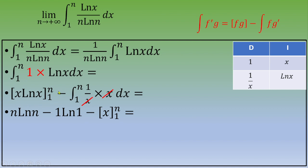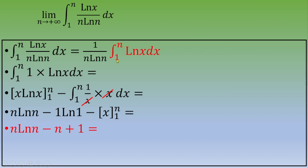Expanding and evaluating, the integral from 1 to n of 1 dx equals x from 1 to n, which is n minus 1. Since ln(1) = 0, the integral from 1 to n of ln(x) dx equals n·ln(n) minus n plus 1.